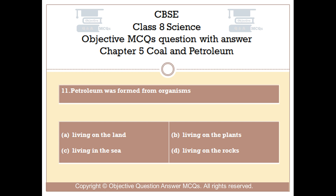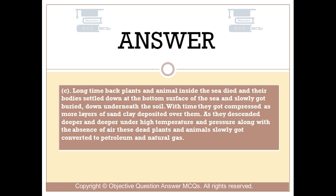The right answer is Option C. Long time back, plants and animals inside the sea died, and their bodies settled down at the bottom surface of the sea and slowly got buried underneath the soil. As they descended deeper and deeper, under high temperature and pressure along with the absence of air, these dead plants and animals slowly got converted to petroleum and natural gas.